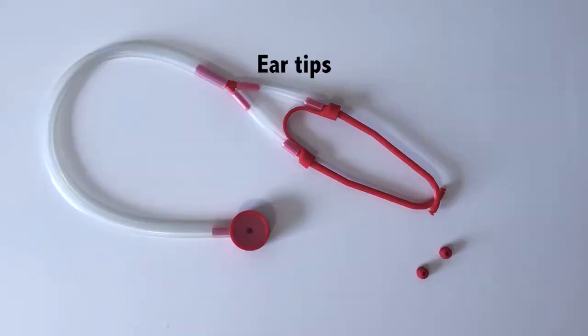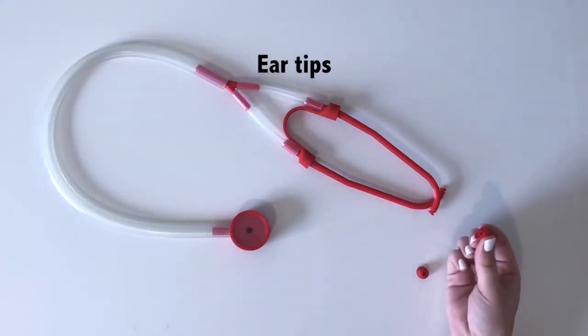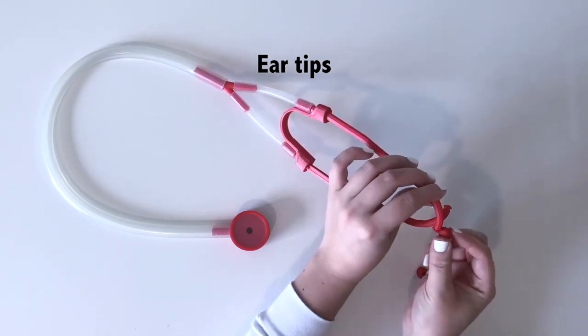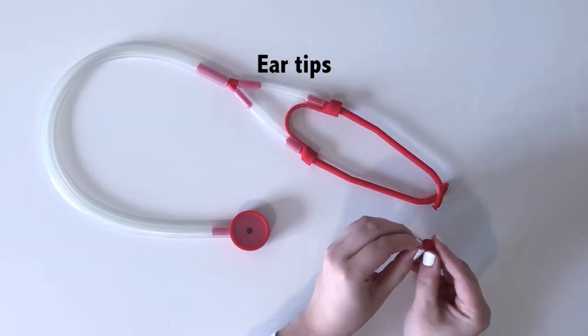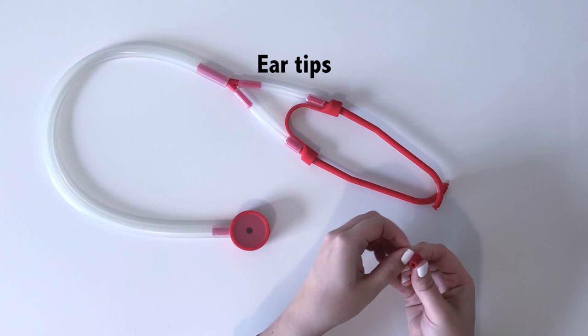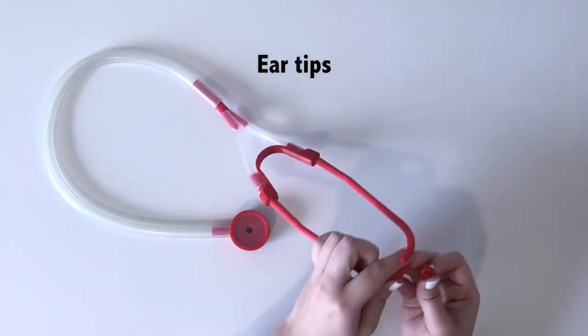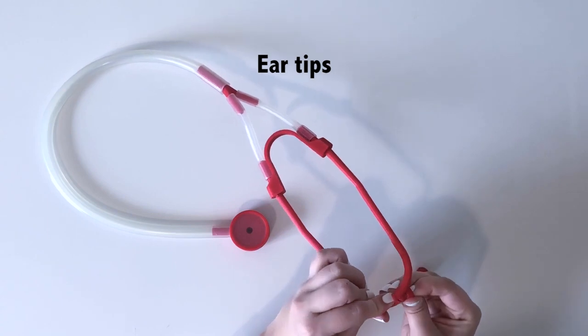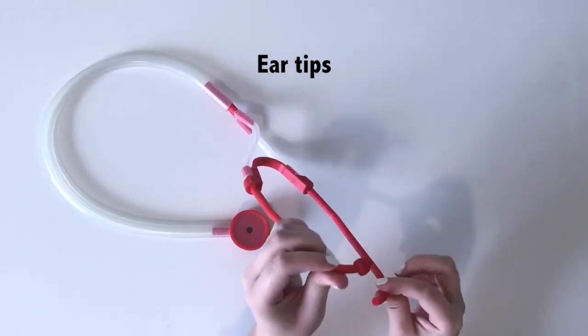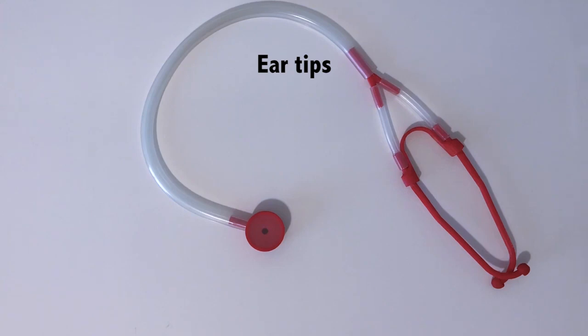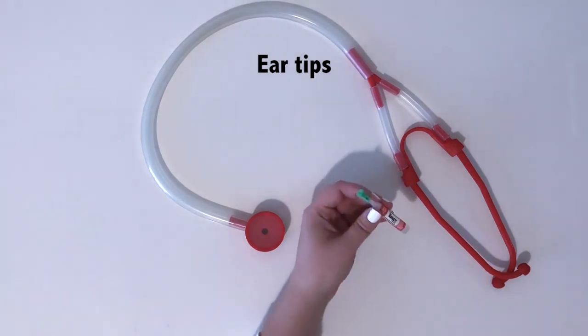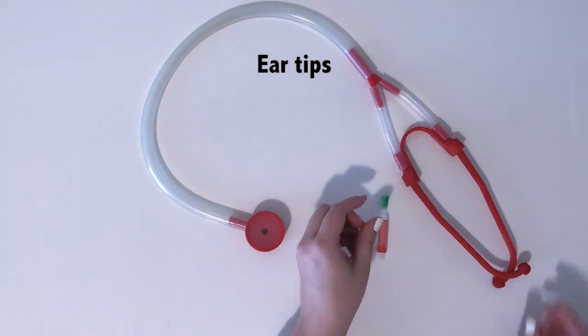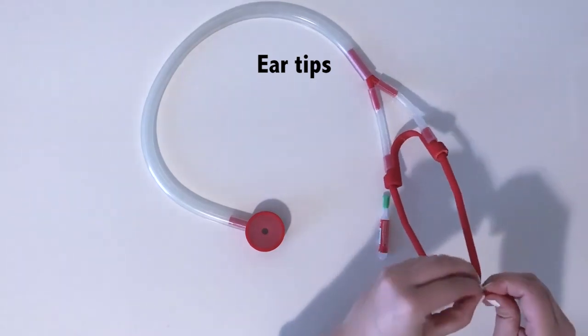Finally, put the ear tips onto the ends of the ear tubes. One technique is to flip it inside out and then place it on the end of the ear tube. It's a good idea to place a small amount of crazy glue onto the inside of the earbud so it doesn't fall off when you're using your stethoscope.